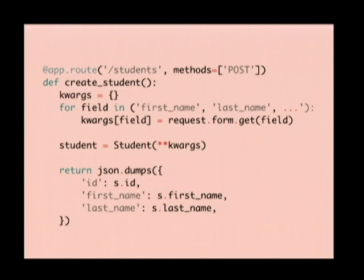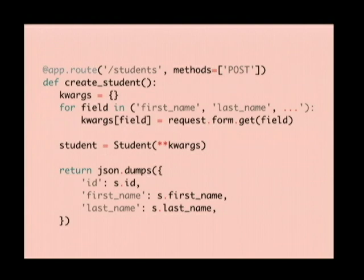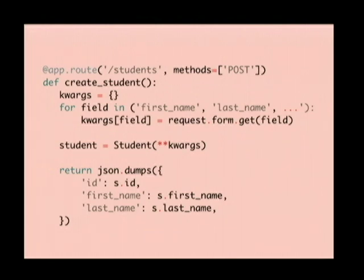Then we're going to create a student object. I left out the line of persisting into the database for purposes of fitting this on the slide, and then we'll dump out the representation and return it to our client. In the real world, this would be a little longer too, because we'd have some validation. SQL injection and stored XSS are not fun, so we'd probably make sure that our arguments are acceptable.